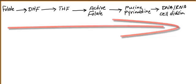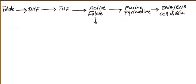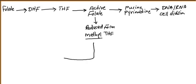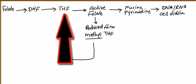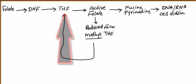Active folate has a reduced form called methyl-tetrahydrofolate, which has a methyl group attached. Active folate is converted to methyl-tetrahydrofolate, and methyl-tetrahydrofolate will convert back to tetrahydrofolate so the cycle can continue. Without this reduction step, you would run out of active folate and develop a folate deficiency.